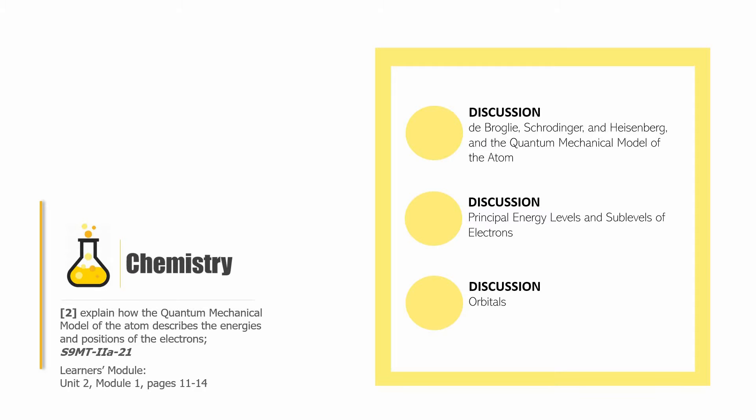Welcome back to the Knowledge Catalog. This is still Grade 9 Chemistry, and we are going to work on the second learning competency: explaining how the quantum mechanical model of the atom describes the energies and positions of the electrons. If you want to follow through with the reading material, you may open the Science Nine Learners Module, Unit 2, Module 1, pages 11 to 14.